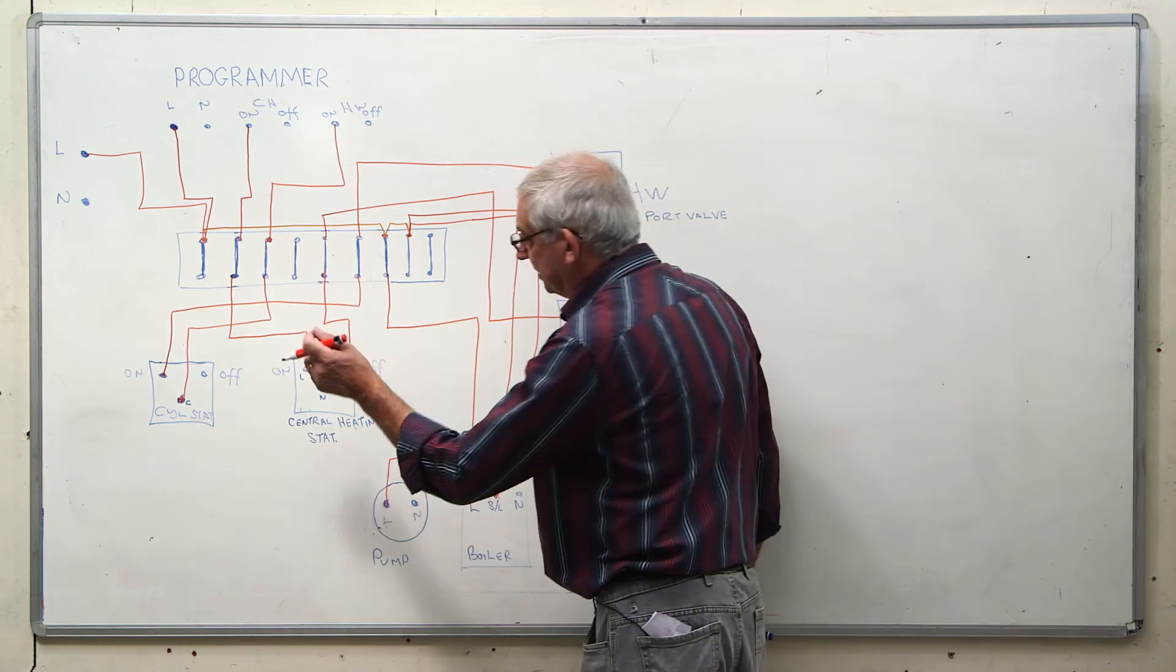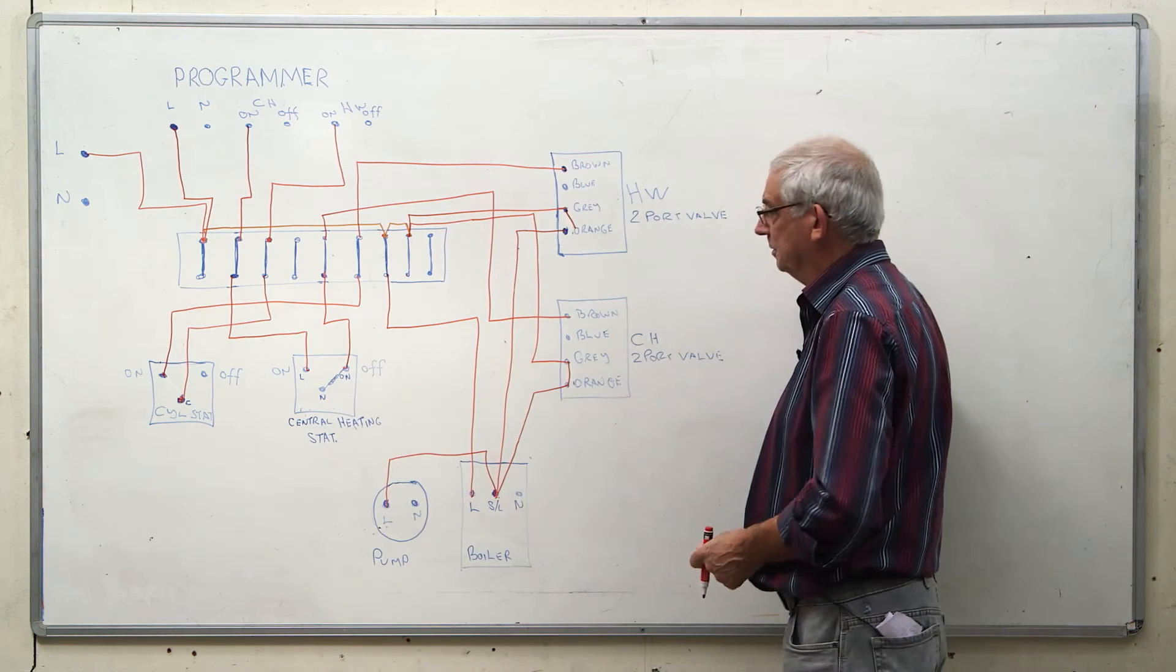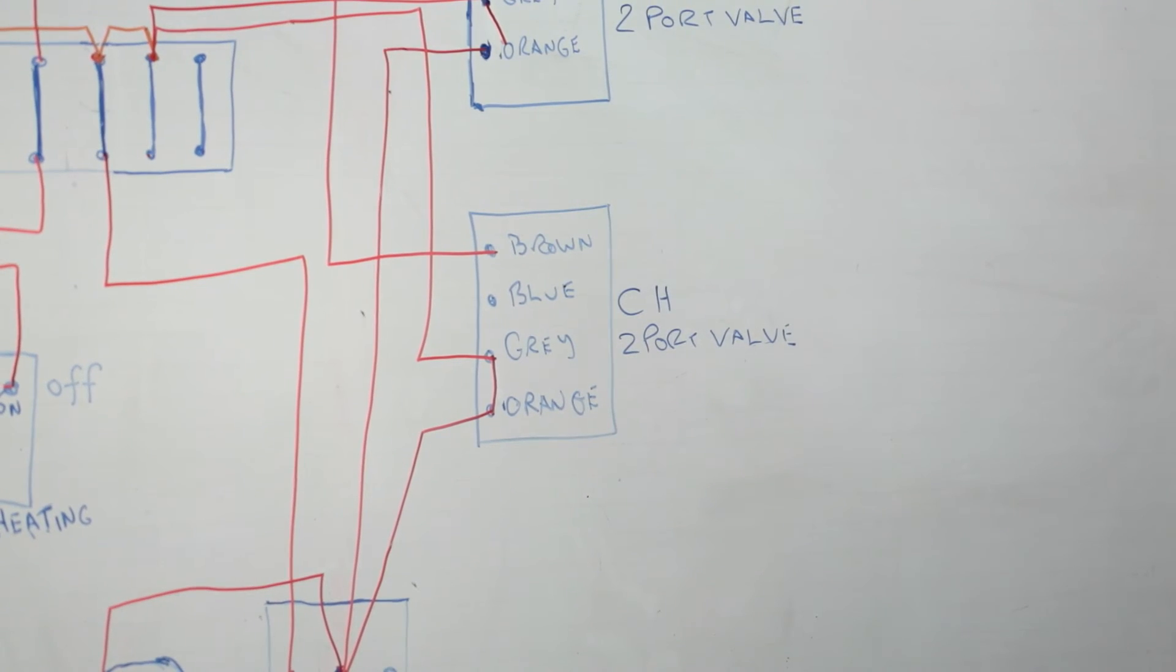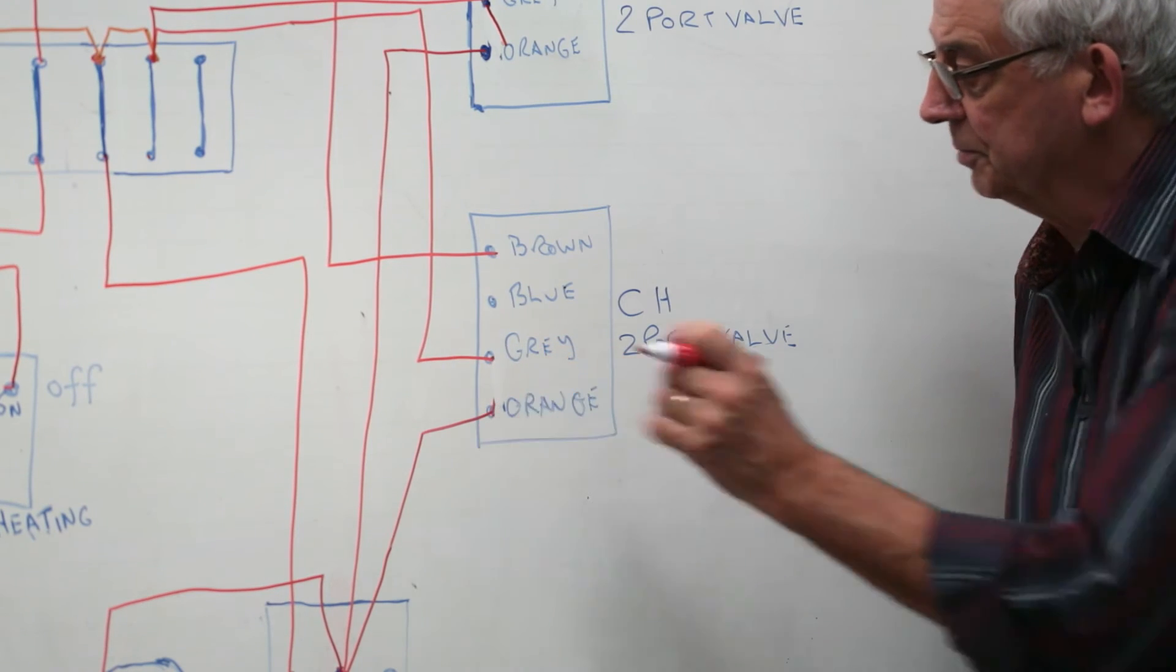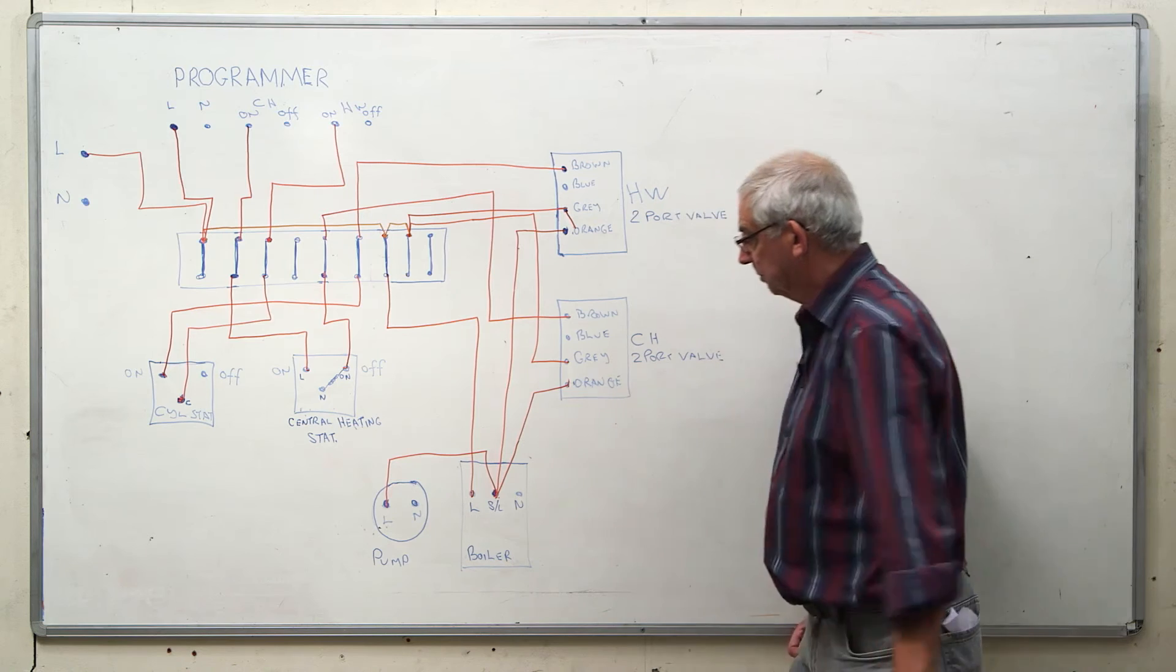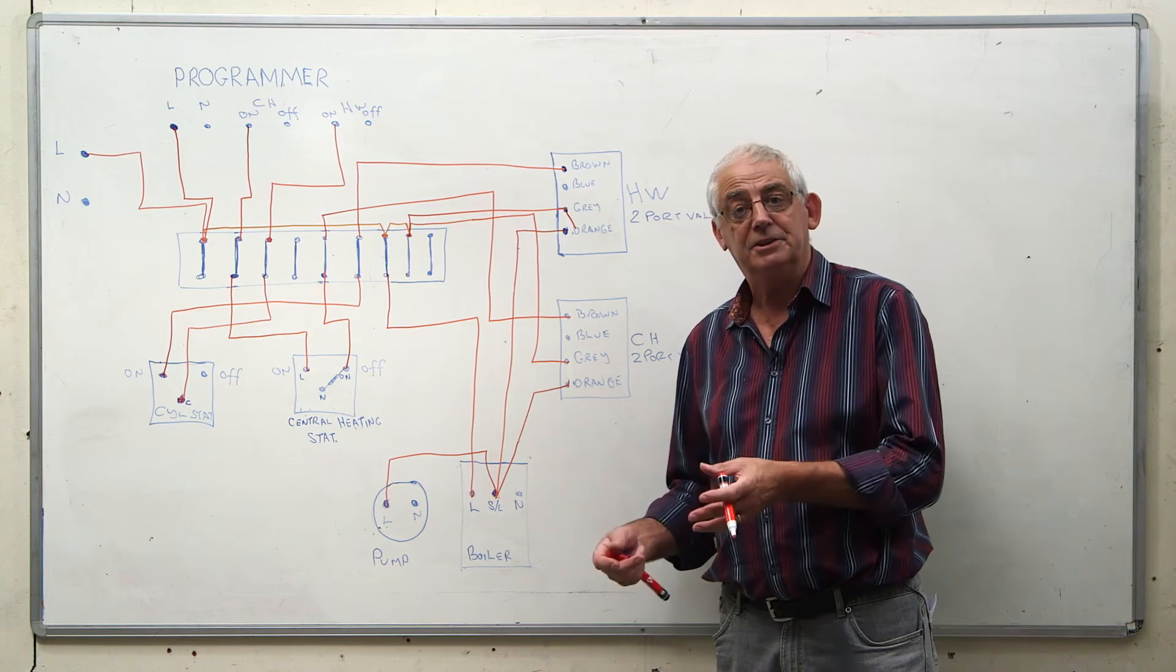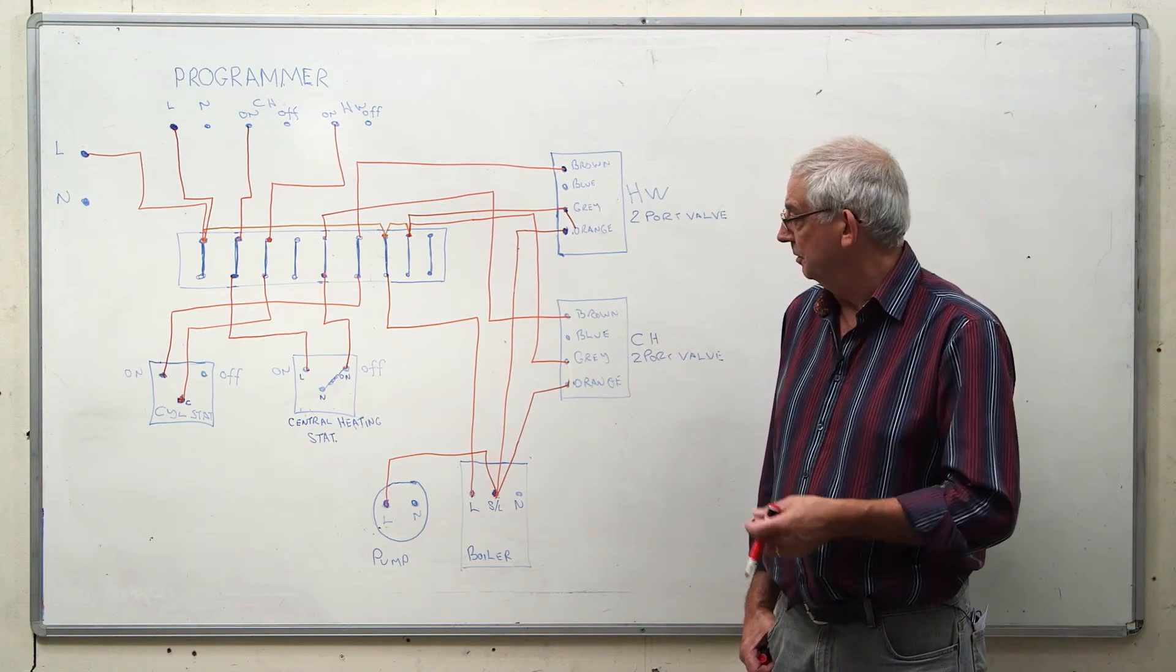Central heating is satisfied. Switch opens. Two port valve closes because it's spring loaded. Micro switch now opens. Shuts off the supply to the boiler. Permanent live will ensure that the pump keeps running if it needs to. So, there we have a central heating system.